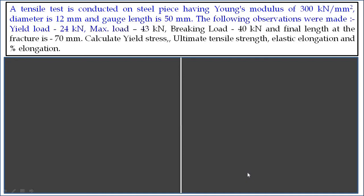Following observations were made. Yield load 24 kN, maximum load 43 kN, breaking load 40 kN, and final length at the fracture is 70 mm. Calculate yield stress, ultimate tensile strength, elastic elongation and percentage of elongation.